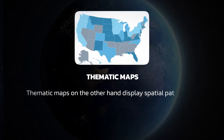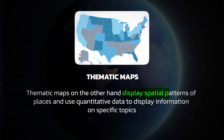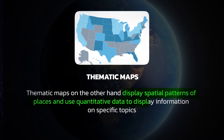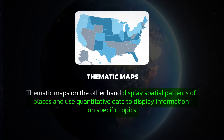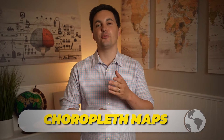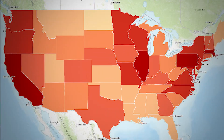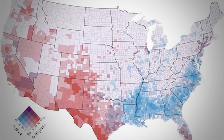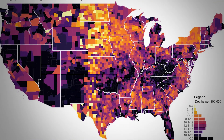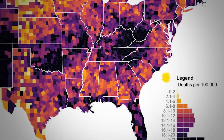Thematic maps, on the other hand, display spatial patterns of places and use quantitative data to display information on specific topics. Choropleth maps display data by using different colors or different shades of colors, with each color or shade showing a different quantity of a data set, as seen in the legend.